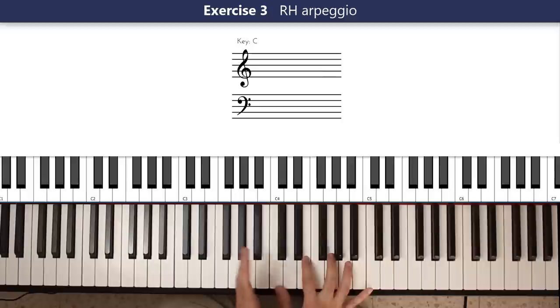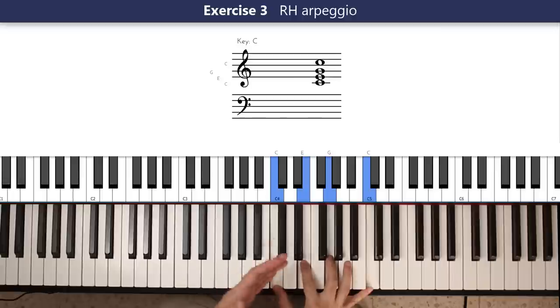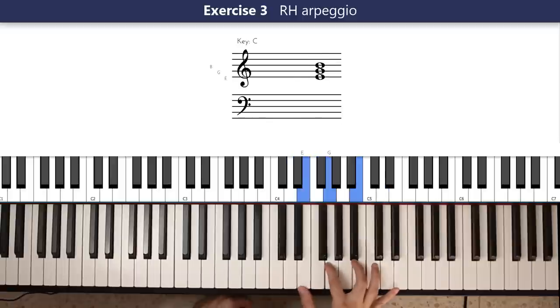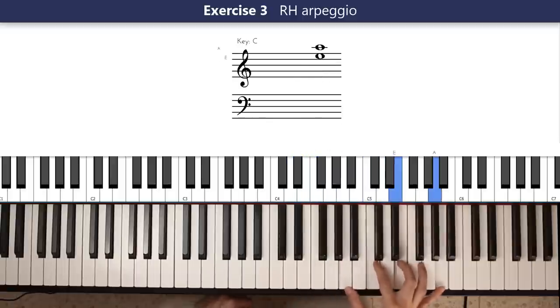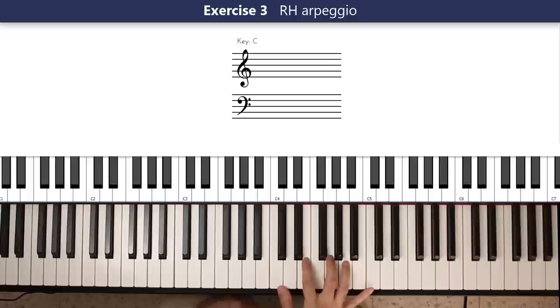Let's move on to the next exercise. For this, we're going to go back to this arpeggiation in the right hand. And this time, repeat it, but go up the white scale, the C major scale. So each time, we're going to take this shape, play it as the pattern I've shown you, and then move it up by one note, and repeat it, and then again, until you get back to the original shape an octave higher.